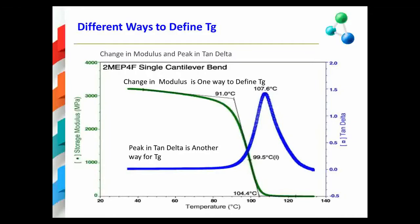Here once again is a typical DMA plot from the polymer literature. As I had mentioned already, there is more than one way to discuss Tg from data such as these. One way is to use the peak in tangent delta. On this particular slide, the peak in tangent delta is noted at 107.6 degrees centigrade. However, in my own personal experience, another more useful way to define Tg in terms of the actual polymer mechanical properties is to use the decrease in E prime, which in this particular slide is observed beginning at 91.0 degrees centigrade.